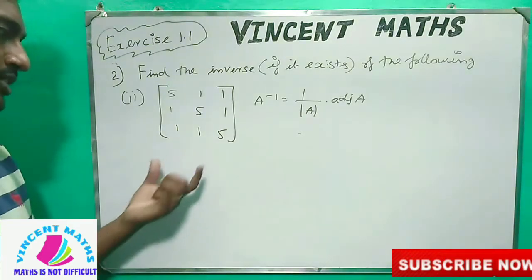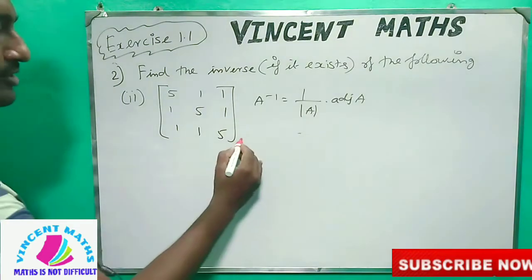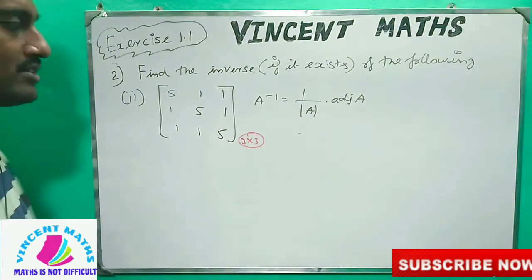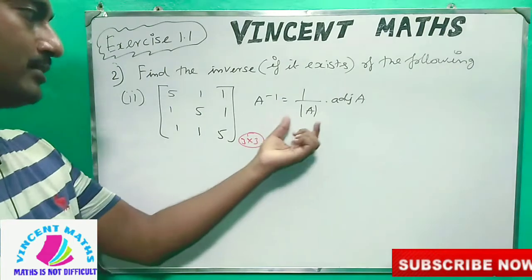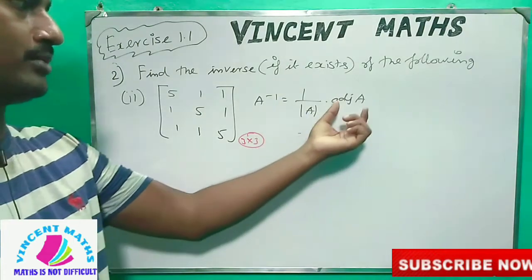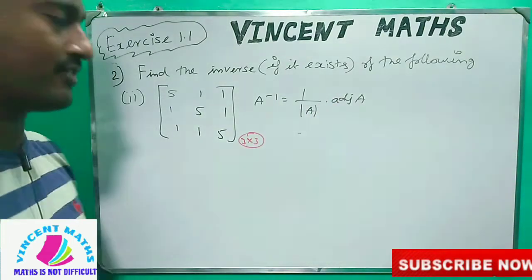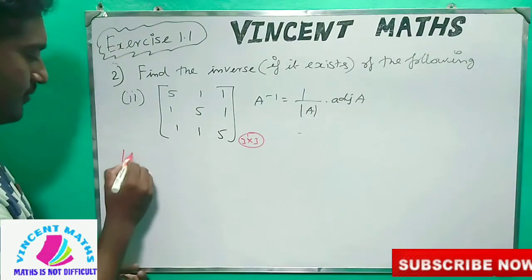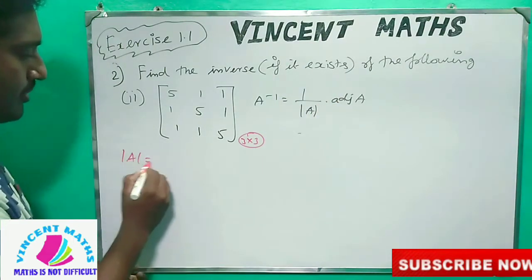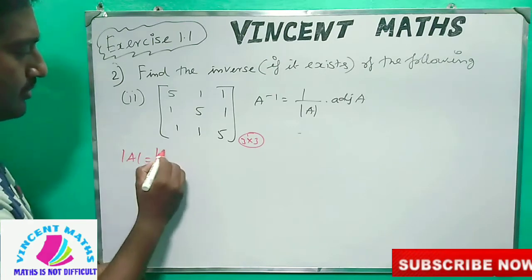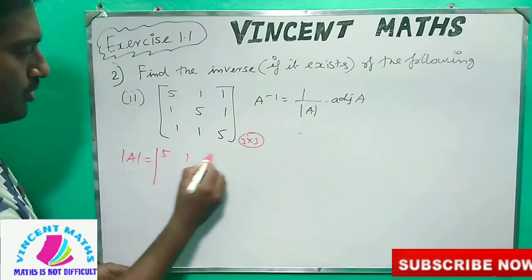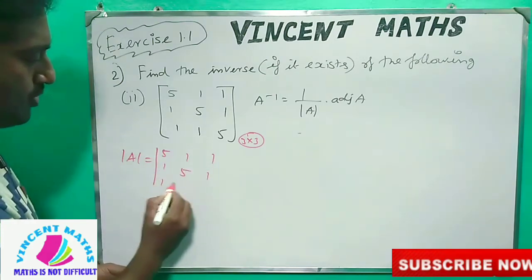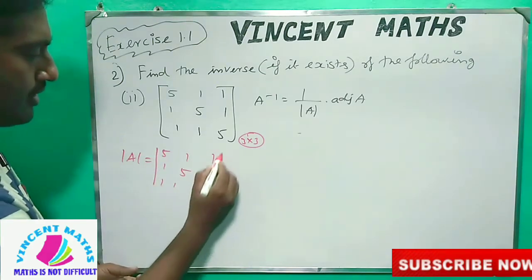Solution 2 is a 3x3 matrix. We need to find the determinant of A and the adjoint of A. The determinant of A uses the matrix: 5, 1, 1; 1, 5, 1; 1, 1, 5.